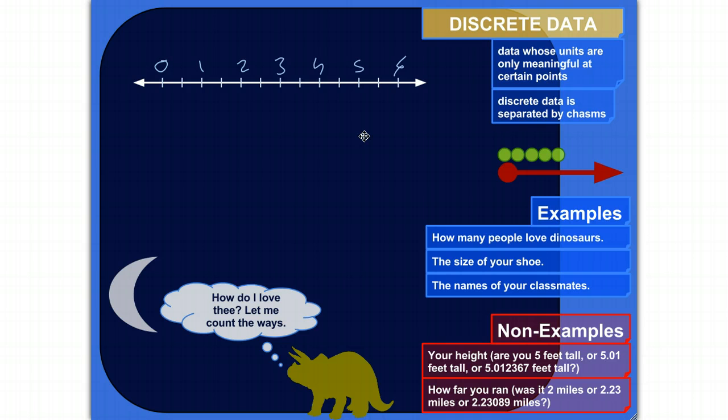So thinking about discrete data, here's how I would define it in a nutshell. It's data whose units are only meaningful at certain points, and maybe it would help if I just visualize it. So if you were to plot discrete data or visualize discrete data, it would look like this.